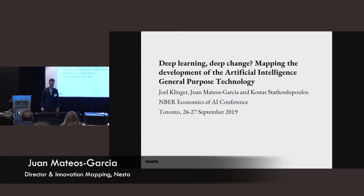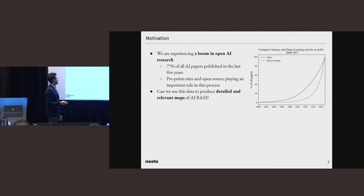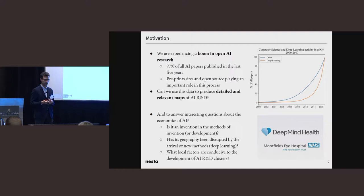Hello, everyone. It is a great honor to be here to present some research that's greatly inspired and indebted by work presented by this community in previous years. The starting point for our work is that we are experiencing a boom in AI research, and a big part of this boom involves dissemination of research through open channels, through preprints, through open source software. We believe there's a great opportunity to use these novel data sources to generate indicators about AI research which are relevant for policy, and to answer interesting research questions.